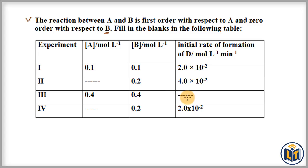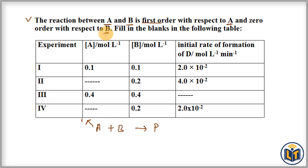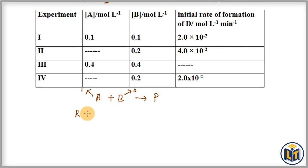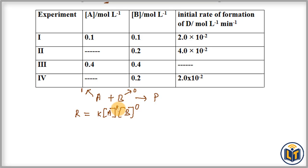There are two reactants in the chemical reaction: A + B → C (product). The condition states it is first order with respect to A, meaning the order with respect to A is 1, and zero order with respect to reactant B, meaning the order is 0. We can now write the rate law expression: Rate R = K × [A]^1 × [B]^0. The order of reaction with respect to A is 1 and with respect to B is 0.